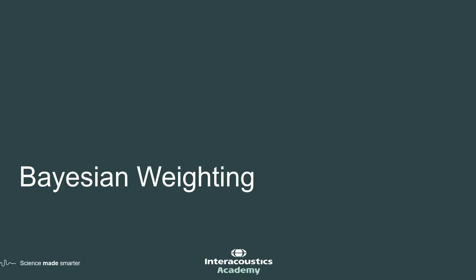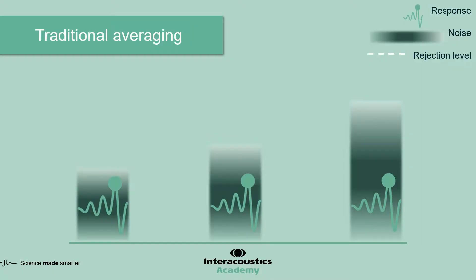This short video will explain how Bayesian weighting works. When traditional averaging is used, the rejection level needs to be set quite strictly in order to reject any excessively noisy sweeps that were above this rejection level.